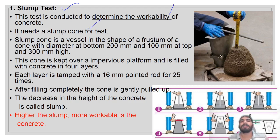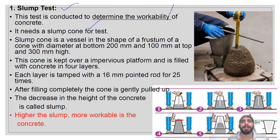The slump cone is a vessel in the shape of a frustum of a cone with a bottom diameter of 200 mm, a top diameter of 100 mm, and a height of 300 mm (30 cm). This cone is kept over an impervious platform.